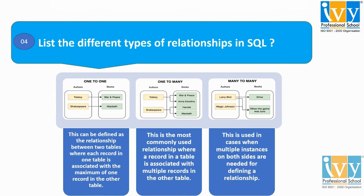Moving to the last one — many to many. This type of relationship is used when multiple instances on both sides are needed for defining a relationship. In the example, we consider two tables, author and books, and they have a many-to-many relationship between them.